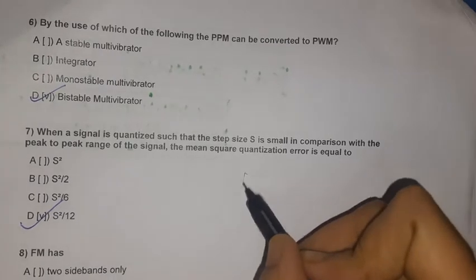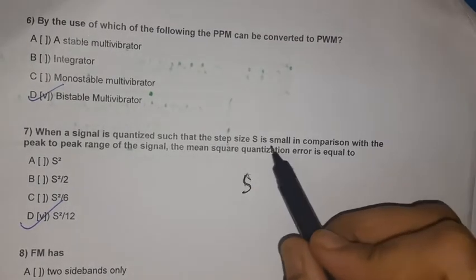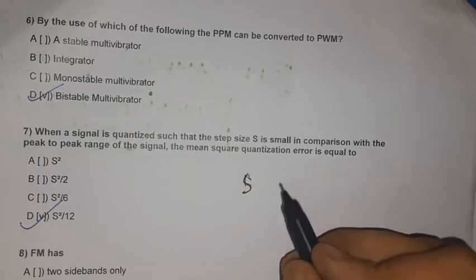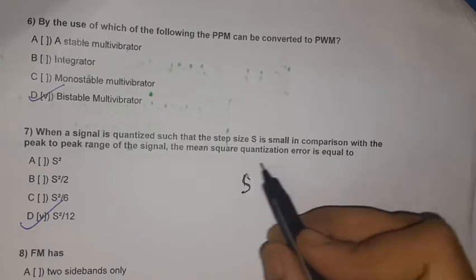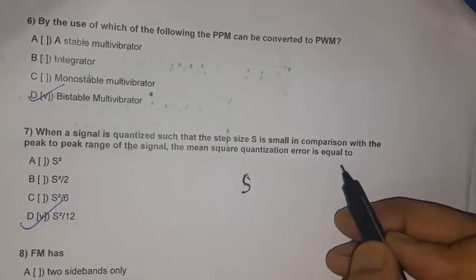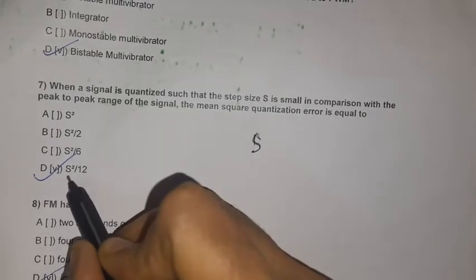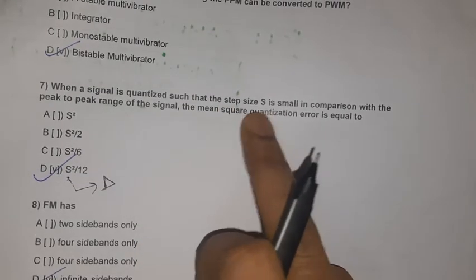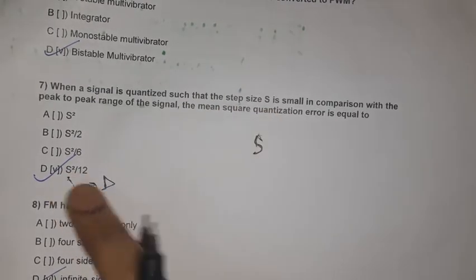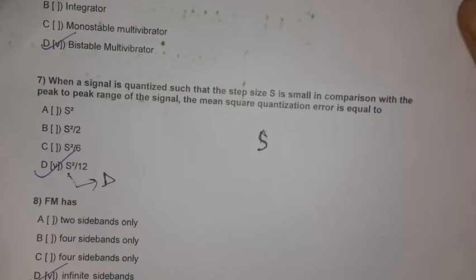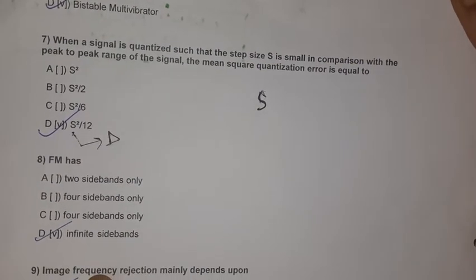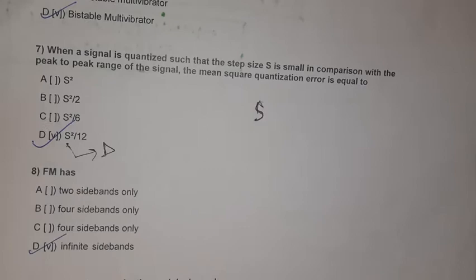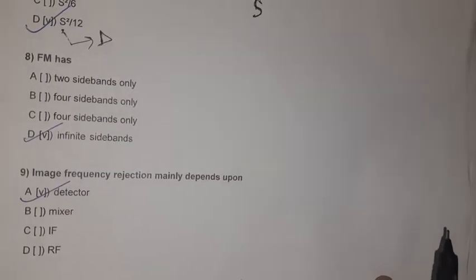Question 7: When a signal is quantized such that the step size s is small in comparison with the peak-to-peak range of the signal, the mean square quantization error is equal to s²/12 — generally written as Δ²/12, where Δ is the step size.